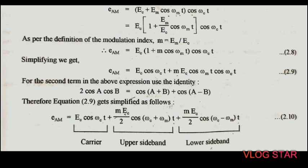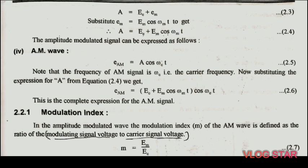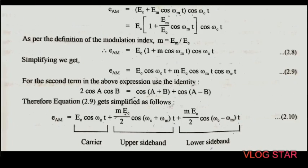Now let us see the frequency spectrum of the AM wave. The frequency spectrum is a graph of amplitude on the y-axis versus frequency on the x-axis. The frequency spectrum of the AM wave tells us which frequency components are present in the AM wave and what their amplitudes are. For this, consider the AM wave equation already calculated: e_AM = E_c (1 + E_m cos(ω_m t)) cos(ω_c t).